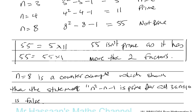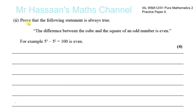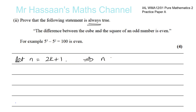Now the next part of this question, part 2, says: prove that the following statement is always true — the difference between the cube and the square of an odd number is even. For example, 5 cubed minus 5 squared is 125 minus 25, which equals 100 and is even. We need to prove this for every single case, so we need to think about how to represent all odd numbers. If we let n equal 2k plus 1, then n is always odd.